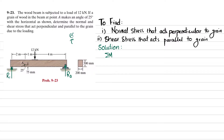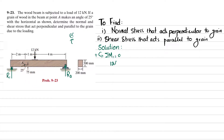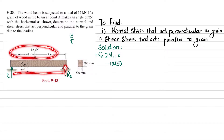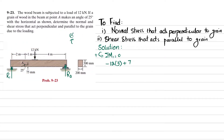The first equilibrium equation: sum of all moments about point 1 equals zero, taking counterclockwise as positive. The 12 kN load at 3 meters produces a clockwise moment, so it is negative: −12 × 3. R2 at 7 meters produces counterclockwise, so +7 × R2 = 0. This gives 7R2 = 36, so R2 = 5.14 kilonewtons.